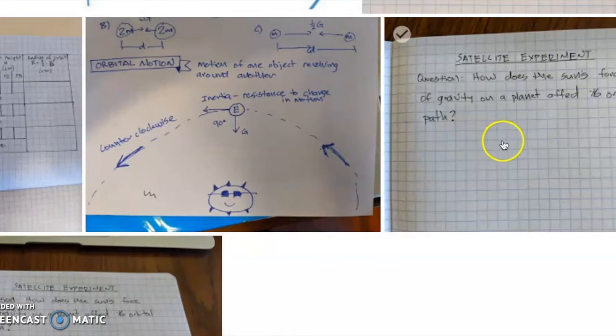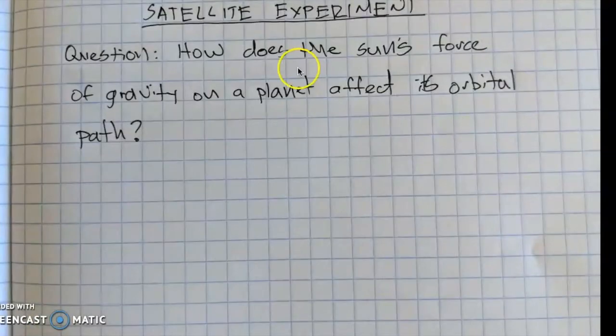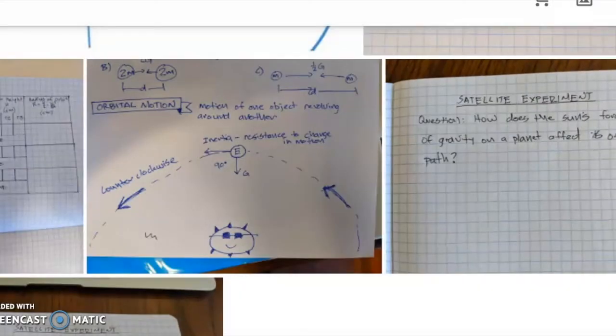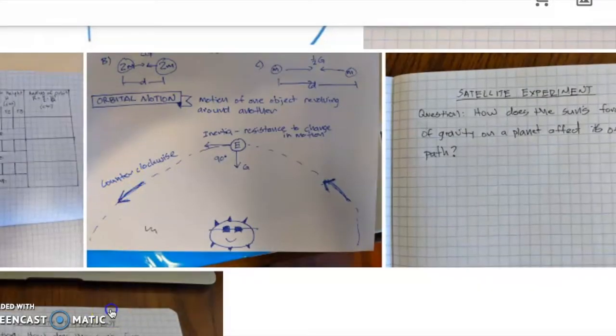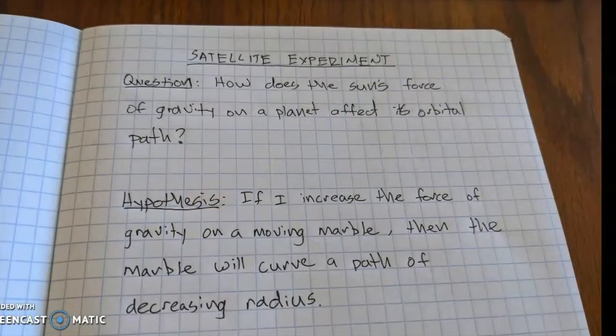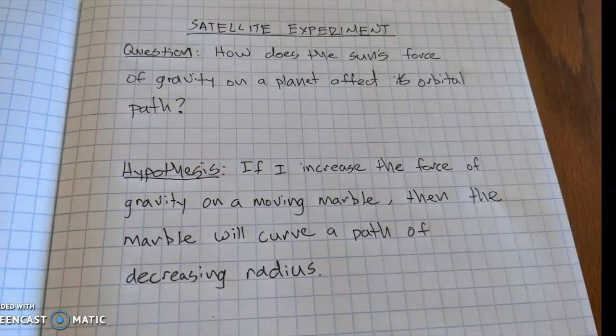So here was my question that I wanted to answer for this experiment: How does the Sun's force of gravity on a planet affect its orbital path? And then I made a hypothesis here: if I increase the force of gravity on a moving marble, then the marble will curve a path of decreasing radius.